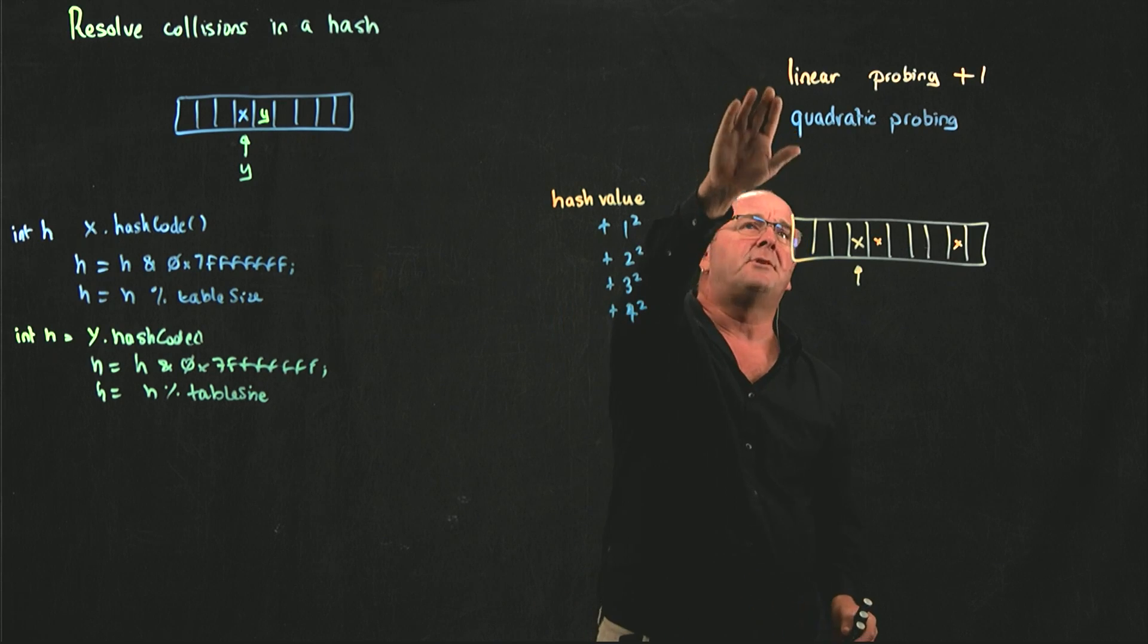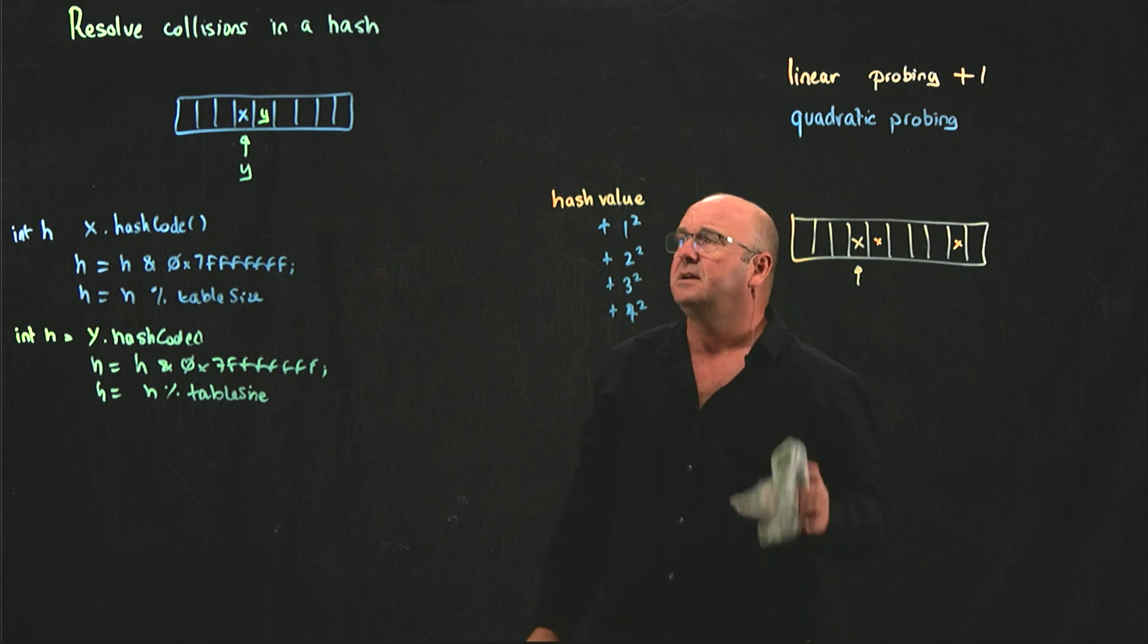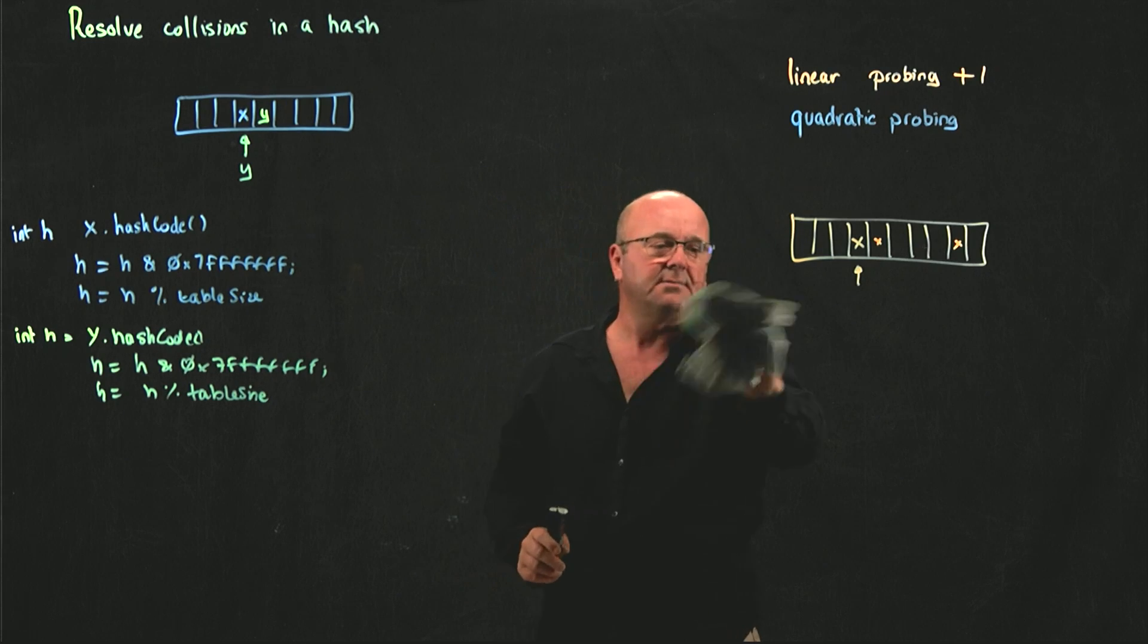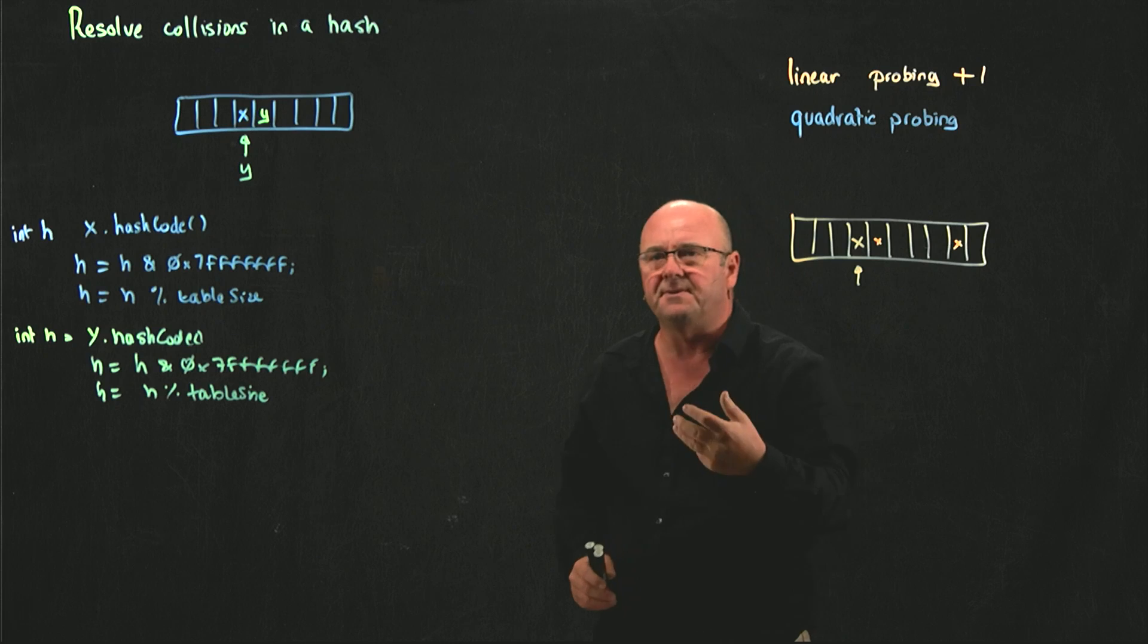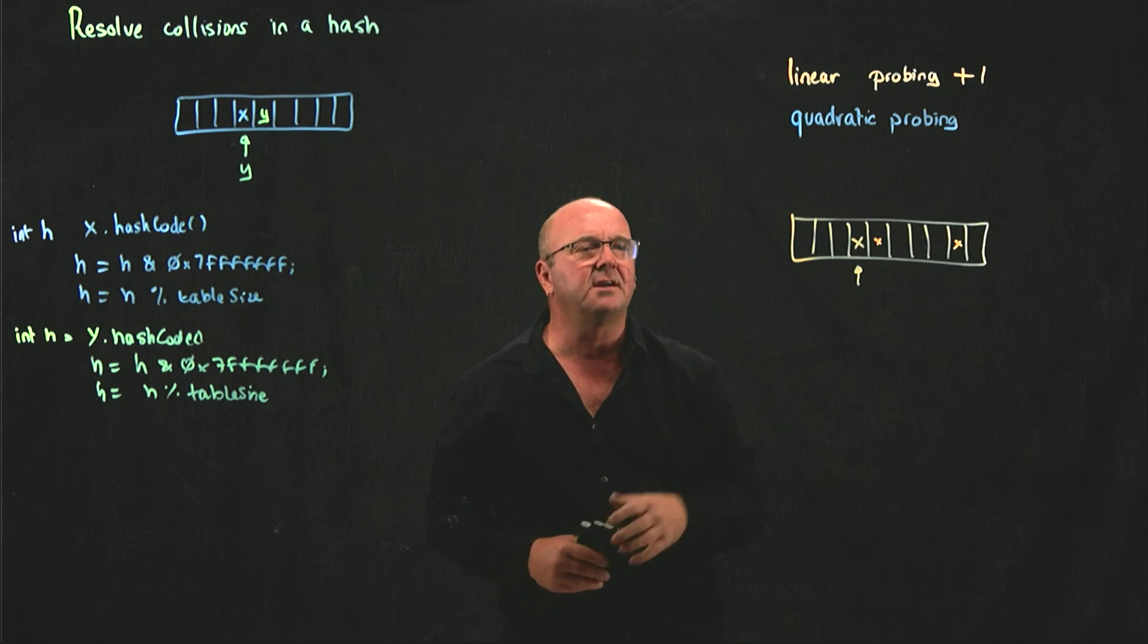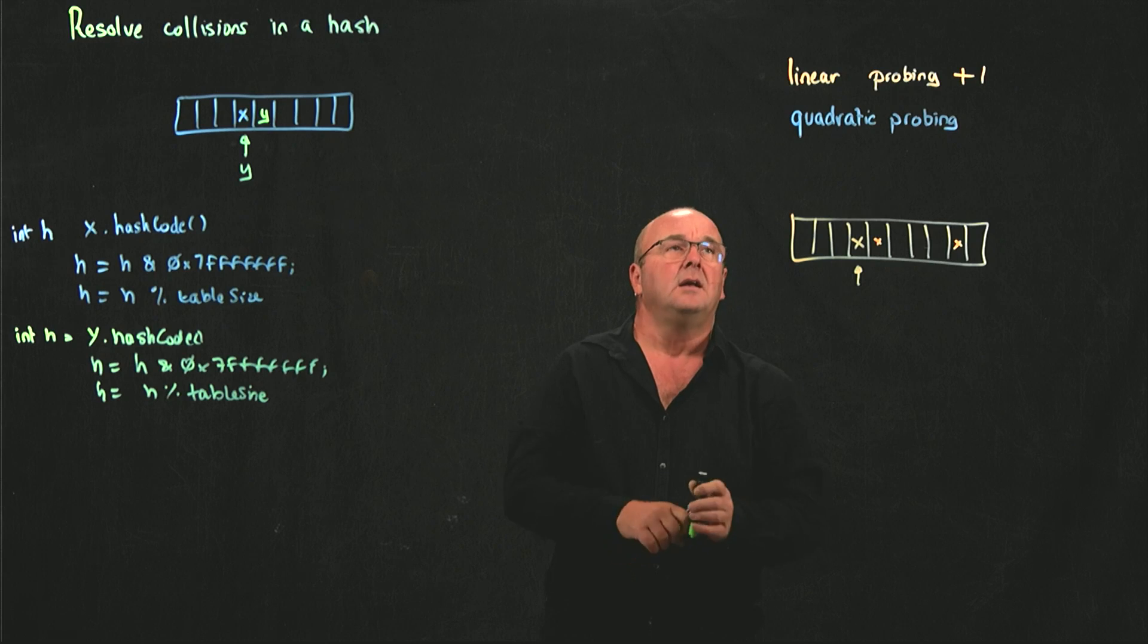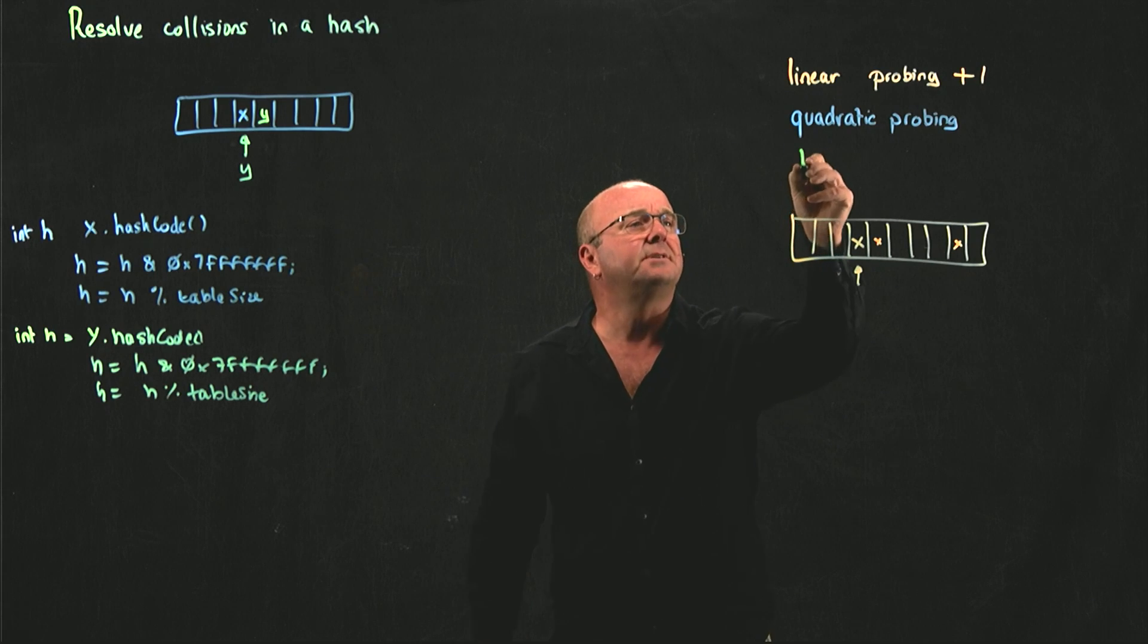So, linear probing and quadratic probing are two approaches to resolving collisions, where all we're doing is just incrementing, very simply, very trivially, we're incrementing the result of the hash value.